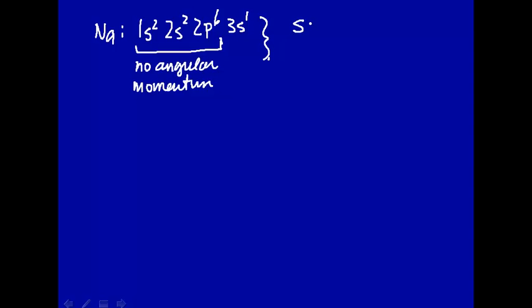S means that it's l=0. That's the quantum number, l=0. Since we only have one electron, we don't have to worry about coupling with other electrons, so we can immediately go to capital L=0 and capital S=1/2. So that's the ground state.